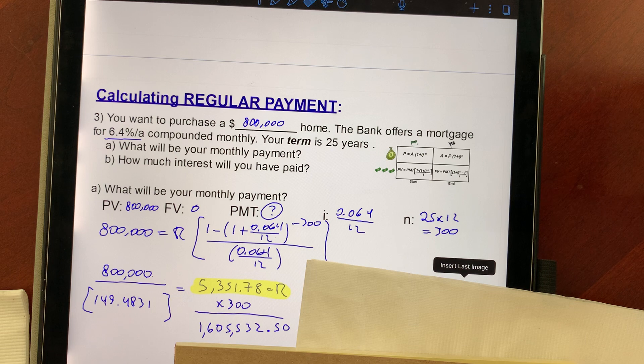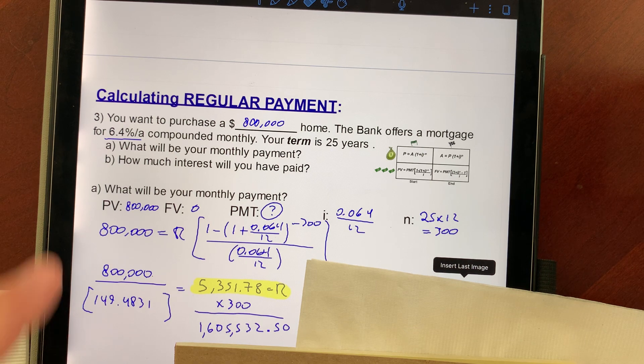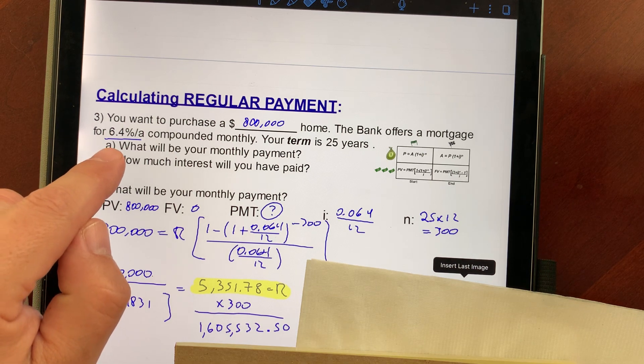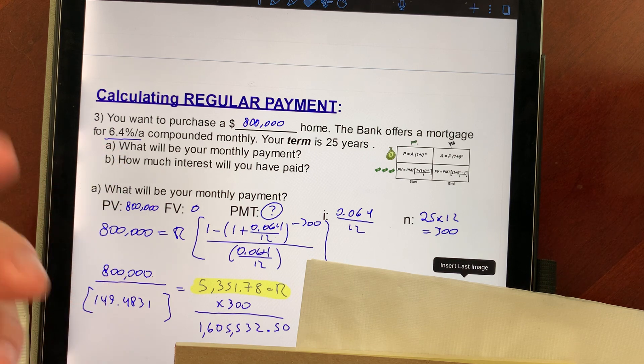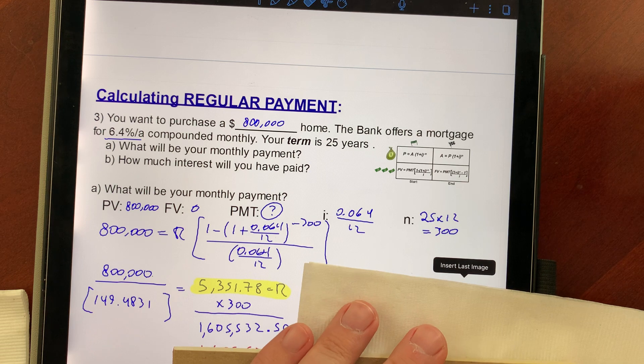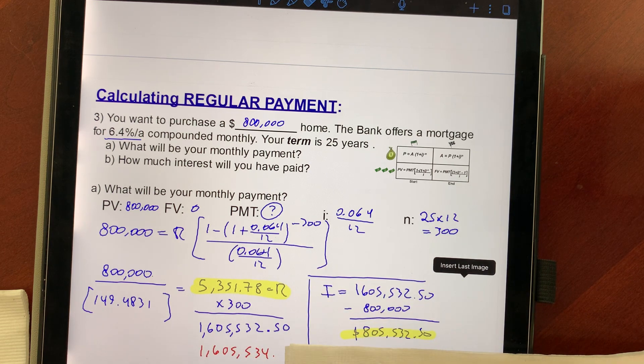So it's in your interest to try to pay this as fast as you can, because we pay, as you can see, a lot of interest. You can play around with the spreadsheet, and you can see that 6.4, if you bring it down, it's not going to be exactly double. But it's a humongous amount of money. So how much interest? You pay $805,000 just in interest.